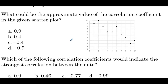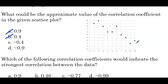What could be the approximate value of the correlation coefficient in the given scatter plot? The first thing to notice is that if we were to draw a line of best fit, it would have a negative slope. So right away we can cross off choices A and B since they're positive correlation values, meaning the line of best fit would have a positive slope. Now we have to decide — moderate or strong? This data set exhibits a pretty strong linear relationship, so negative 0.9 would be the best approximation for the correlation coefficient.